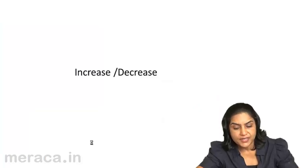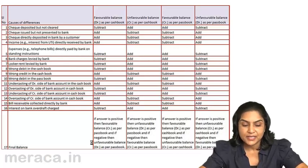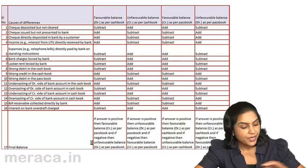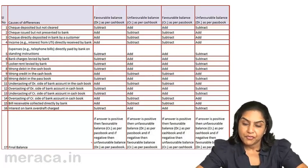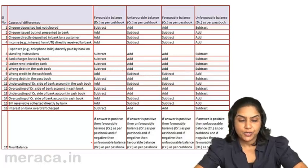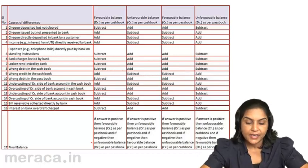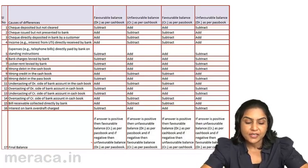The rules of increase and decrease have further been summarized below, in case there is a favorable balance and unfavorable balance as per cashbook, and in case of a favorable balance and unfavorable balance as per passbook. This is a summary of all that we have done. However, let us come to some errors which we did not discuss before.